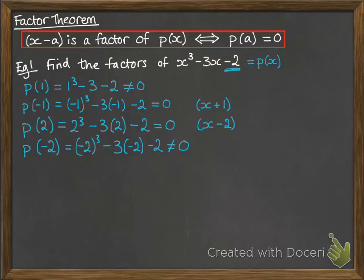If you repeated x minus 2, you would get a 4 at the end instead of the -2. So it's the x plus 1 that is the repeat here. So that cubic is equal to x plus 1 squared times x minus 2.